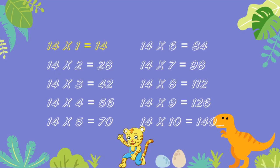14 ones are 14. 14 twos are 28. 14 threes are 42. 14 fours are 56. 14 fives are 70. 14 sixes are 84. 14 sevens are 98. 14 eights are 112. 14 nines are 126. 14 tens are 140.